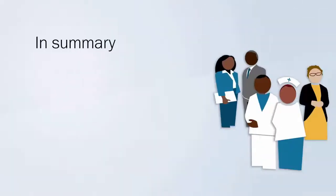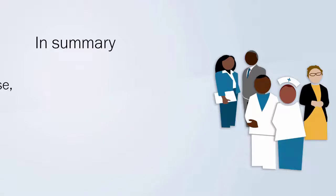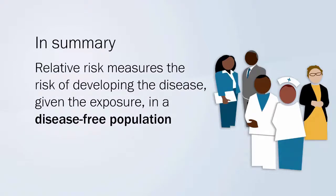In summary, relative risk is the measure of association between exposure and outcome used in a cohort study. Relative risk measures the risk of developing the disease given the exposure in a disease-free population.